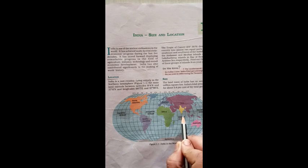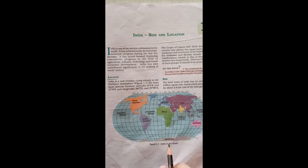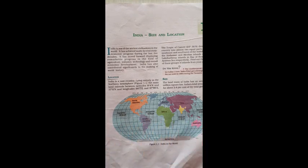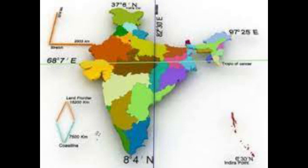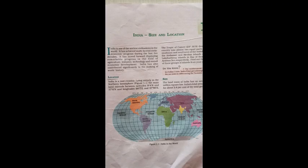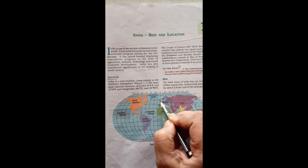Our country India lies totally in the Northern Hemisphere. The Tropic of Cancer passes exactly through the middle of the country. The places situated on or near the Tropic of Cancer have the noon sun exactly overhead twice a year.